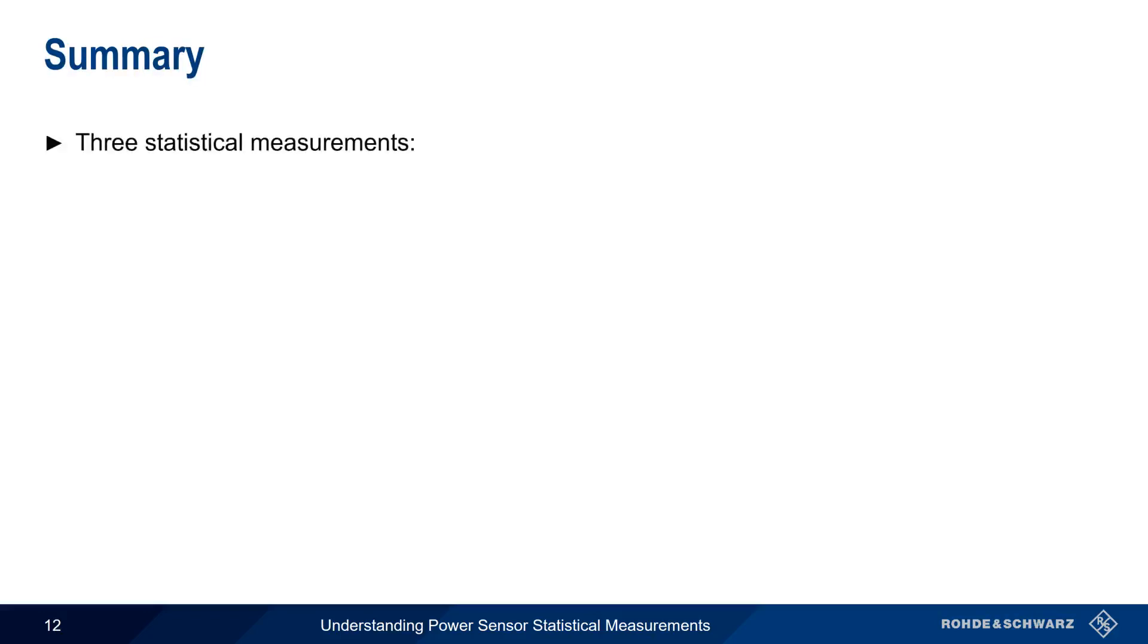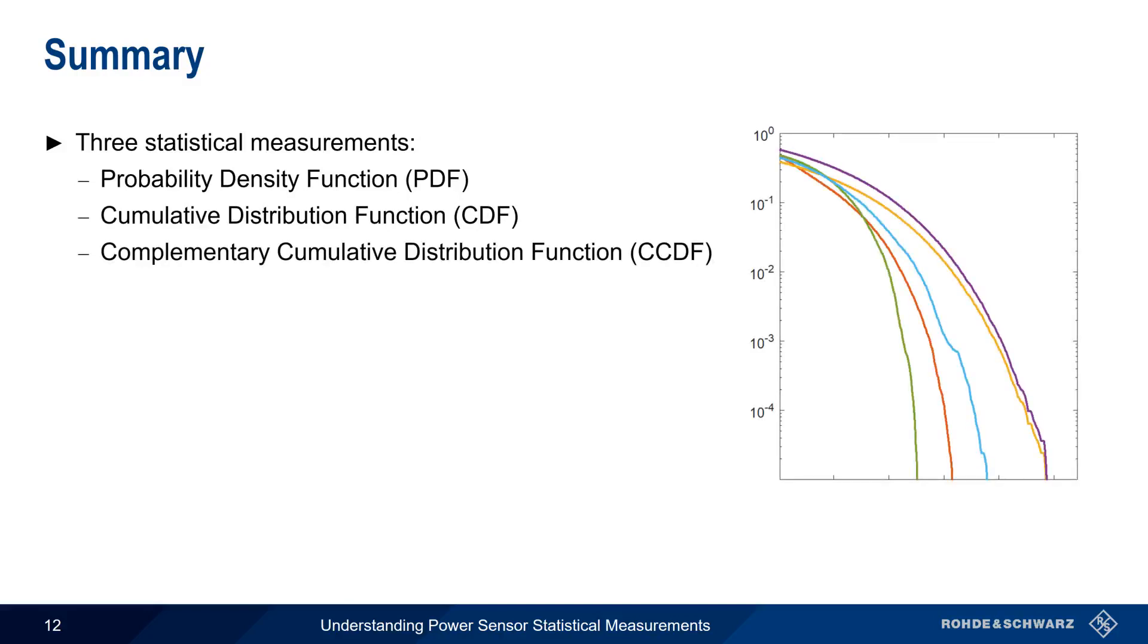So in summary, there are three statistical measurements we can make with power sensors. The probability density function, or PDF. The cumulative distribution function, or CDF. And the complementary cumulative distribution function, or CCDF. Of these, CCDF is by far the most common and the most important.